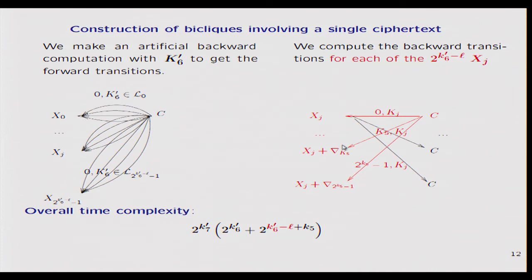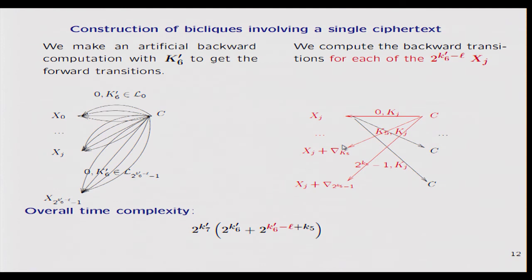Each group of transitions like this can be seen as a biclique transition from the same value x to the ciphertext. For each group, we make K5 vary and compute the backward transition, giving a biclique for each group. The important point is that all these bicliques involve the same ciphertext, so we now have the same data complexity. The time complexity changes a little because we have to compute all backward transitions for each value of x, but this factor is usually smaller than before, and in most cases the time complexity is roughly the same as for classical bicliques.